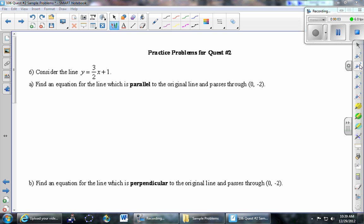This is problem number 6 on the practice problems for quest number 2. Consider the line y equals 3 halves x plus 1. Part A, find an equation for the line which is parallel to the original line and passes through the point 0, negative 2.